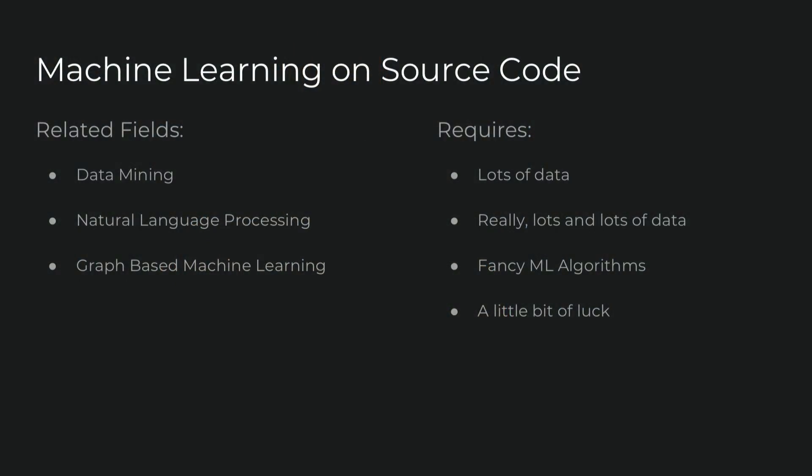What do you need to do machine learning on source code? Source code — lots of it, like really, really lots of it. We have data sets that contain all of the repositories on GitHub and we analyze those. But that is not enough code, because even if you analyze all of the code on GitHub, there's a lot of code outside that you've never seen. So you need as much code as possible. Then fancy machine learning algorithms, and then a little bit of luck.